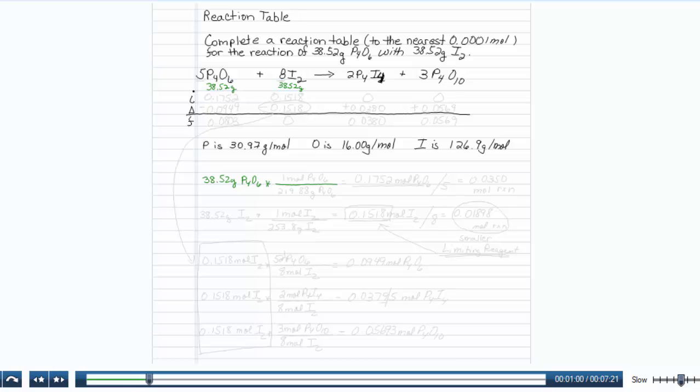I'll use the atomic weights here to find the molar mass of P4O10—sorry, P4O6—and it is 219.88 grams of P4O6 per one mole of P4O6. And we come up with 0.1752 moles of P4O6.